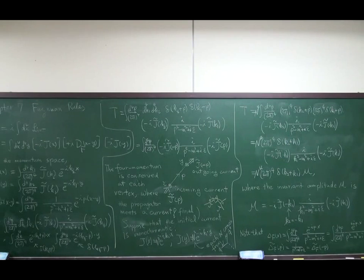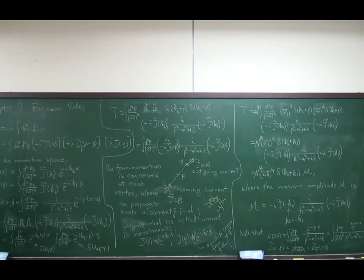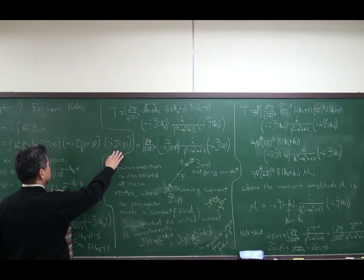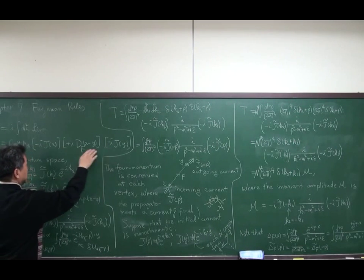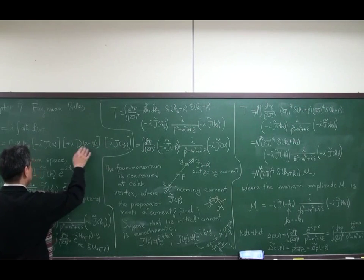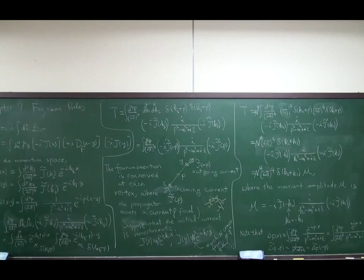Let us study Feynman rules. In the previous class we have shown that the T matrix element is i times the four-dimensional integral of the interaction Lagrangian, and it was decomposed into a double integral where current J is coming in, a particle is propagating from Y to X, and then it disappears as another current. The convention is that the Feynman propagator has a plus i factor and each current has a minus i over a factor. Any additional interaction will bring in D_F times J repeatedly.